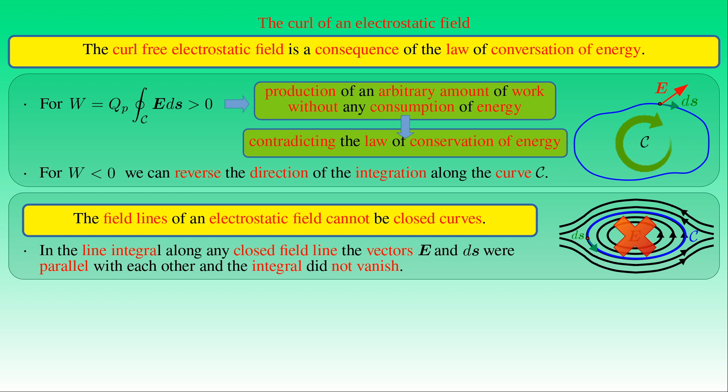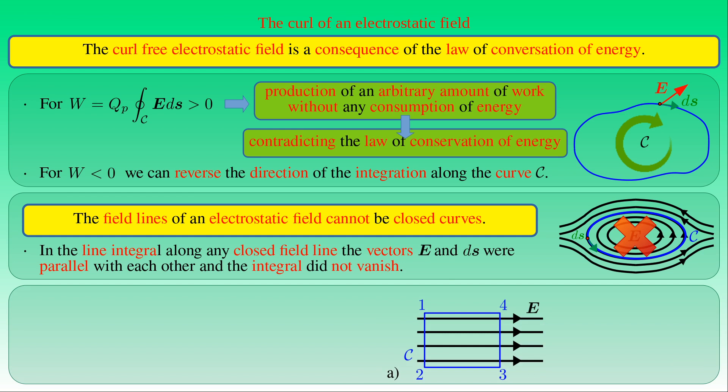This also illustrates why the line integral of E along a closed curve can vanish in a uniform electrostatic field. For a rectangular path aligned with uniform field lines: the line integrals along sides between corners 1-2 and 3-4 are zero since E and dS are perpendicular. The non-vanishing integrals along sides 2-3 and 4-1 cancel each other, because E and dS point in the same direction along one side and opposite direction along the other, while the magnitude of E is the same along both sides.